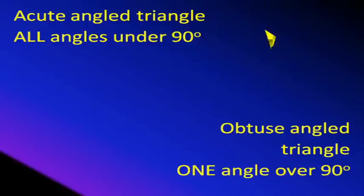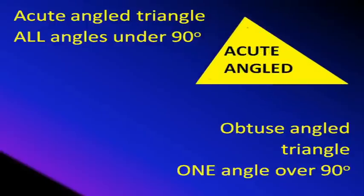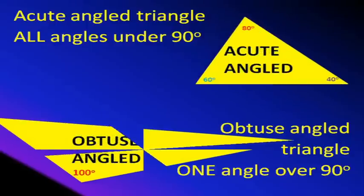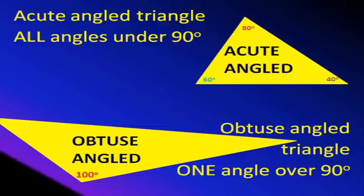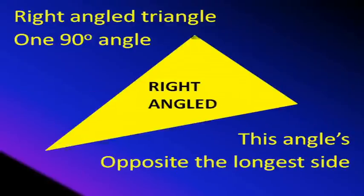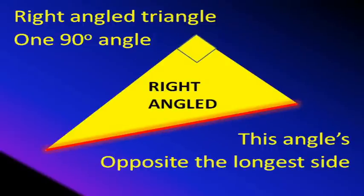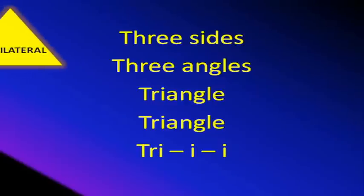Acute triangles: all angles under 90. One angle over 90 — right angle triangle, or 90 degree angle. This angle is opposite the longer side.